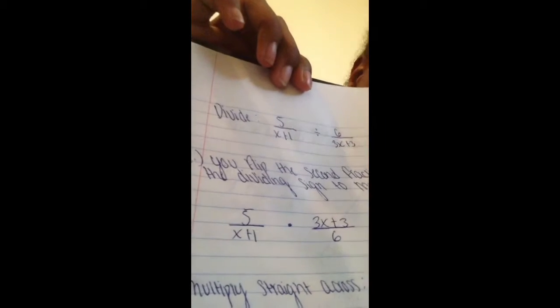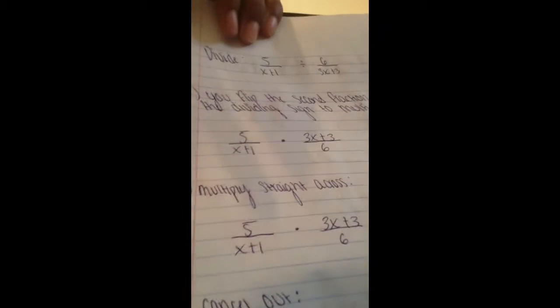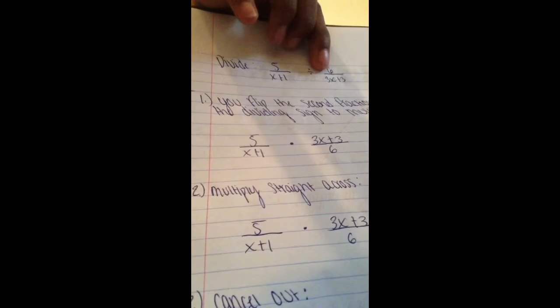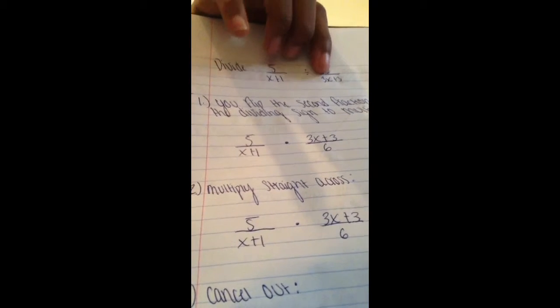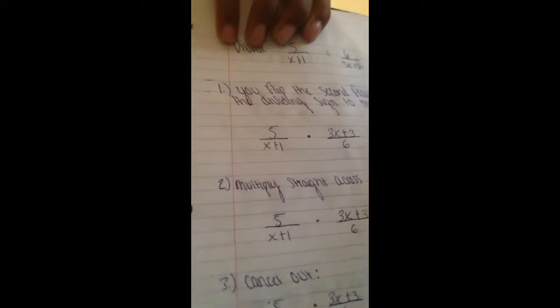So I'm starting off with this problem right here. It's gonna say divide and it's gonna look just like this. Okay, to solve that problem you're going to have to... hold on, I have to sneeze. Okay, no it doesn't, never mind. But to solve this problem you have to flip the second fraction over like a reciprocal. So for the notes I wrote, first note I wrote, you flip the second fraction and change the dividing sign to multiplication. That's what you have to do first before you solve this problem.